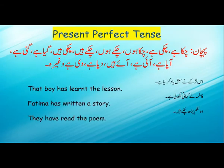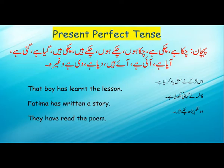Let's have a look at some examples now. 'Ush ladke ne sabak yaad kar liya hai' — 'liya hai', so this is present perfect tense. We have learnt in a previous video that 'has' and 'have' are used in present perfect tense along with the third form of the verb. The subject is 'that boy', so we use it first and then 'has', then the third form of the verb 'learn' which is 'learnt', and then the object 'the lesson'. That boy has learnt the lesson.